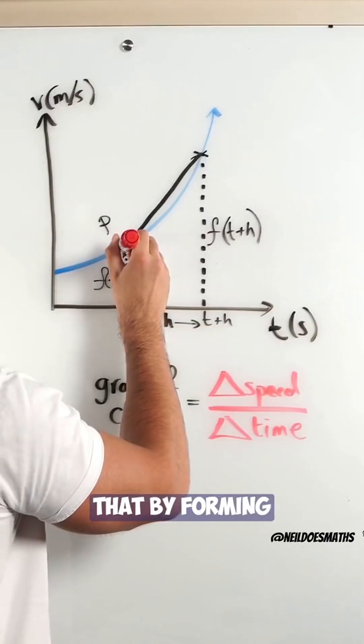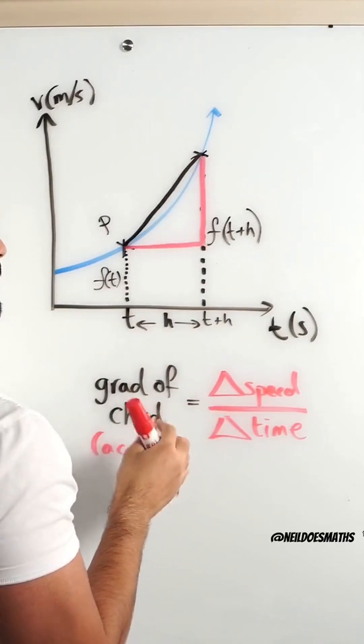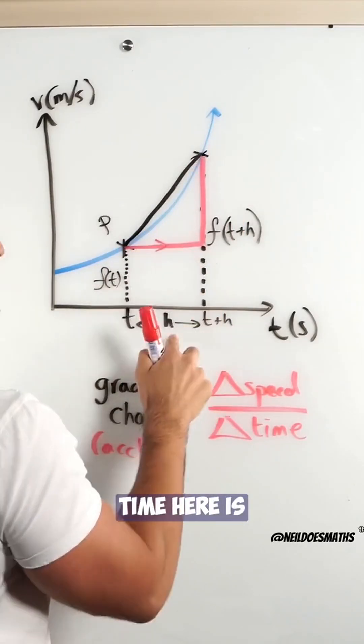We can measure that by forming a triangle between the two points. The change in time here is just h.